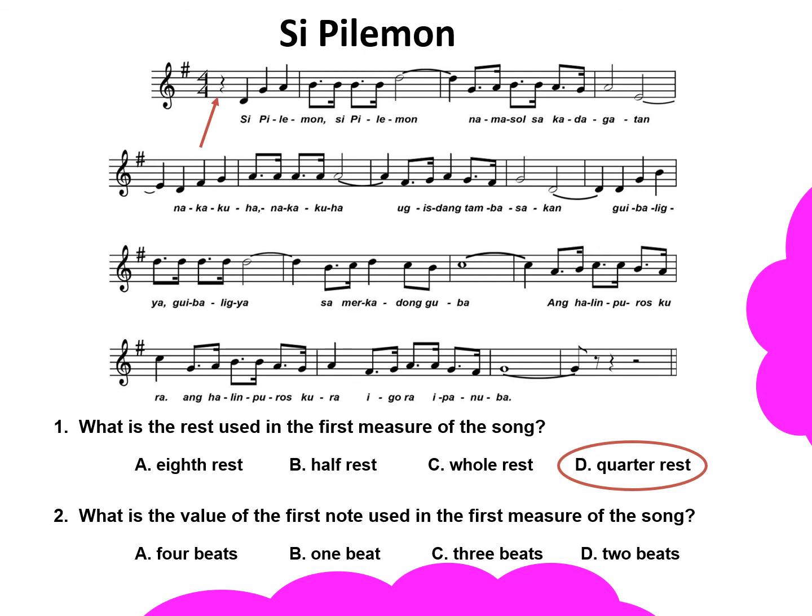Question number 2: what is the value of the first note used in the first measure of the song? Since quarter rest is the first musical symbol used, what is the value of a quarter rest? Choices: letter A, four beats; letter B, one beat; letter C, three beats; or letter D, two beats. If you answered letter B, one beat, then your answer is correct.